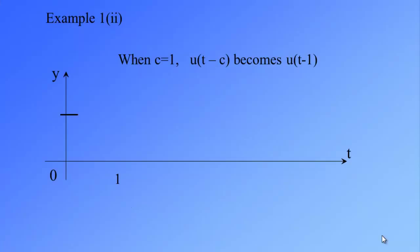Another example. When c equal to 1, u(t-c) becomes u(t-1). And at t equal to 1, we know that this is the time when the changes appear.